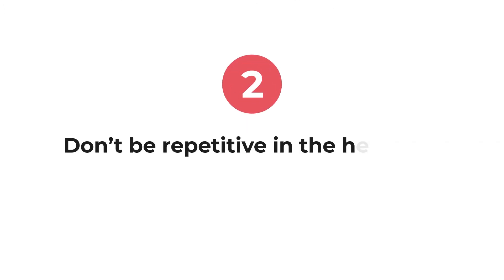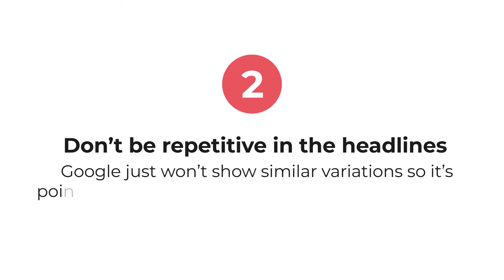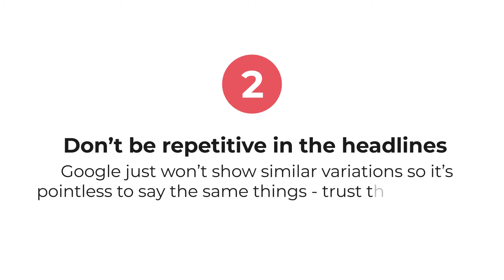Number two: don't be repetitive in the headlines. Google won't show similar variations, so it's pointless to say the same things. Trust the machine.